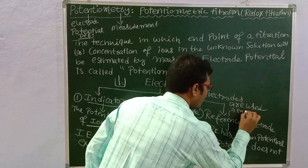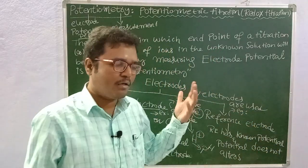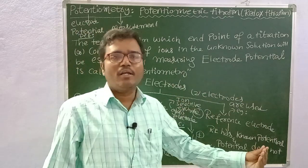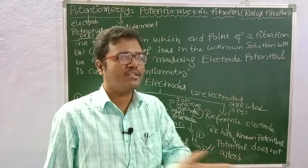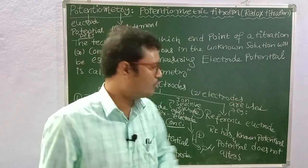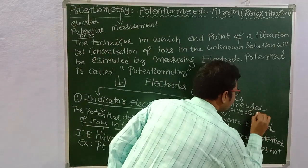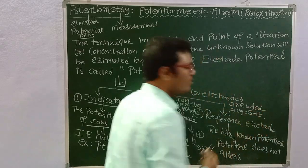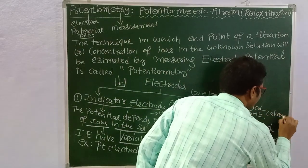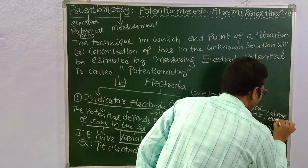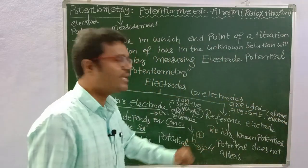Examples of reference electrodes include the Standard Hydrogen Electrode (SHE), the Calomel electrode, and the silver electrode. These are the main examples of reference electrodes used in potentiometry.